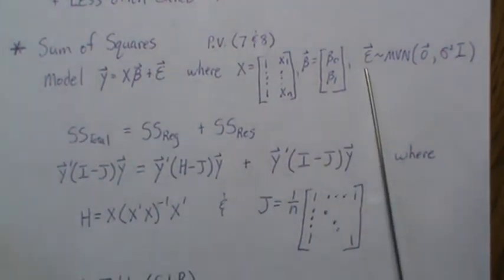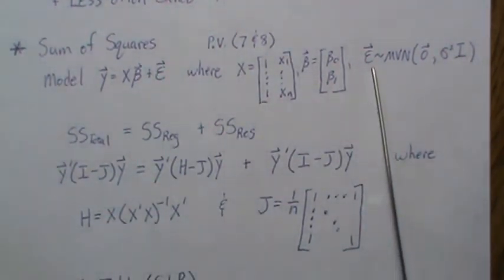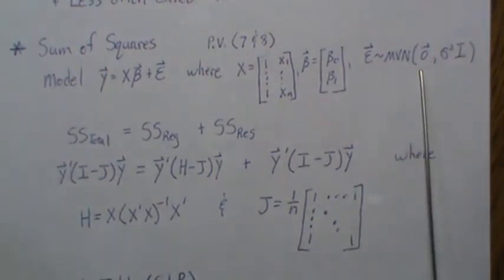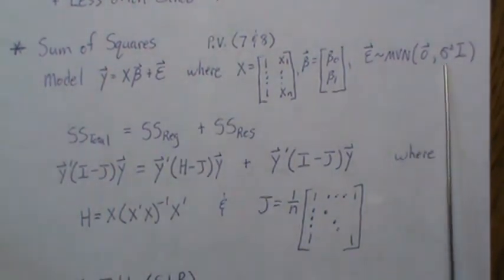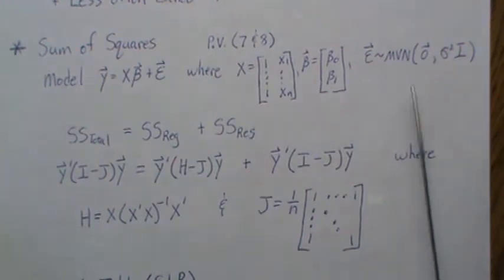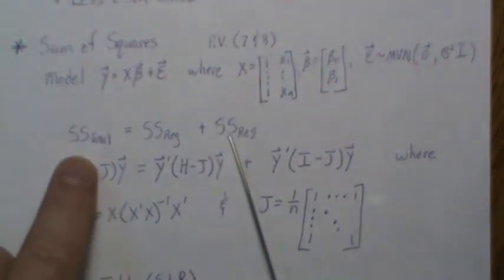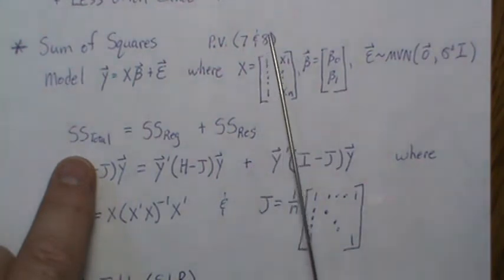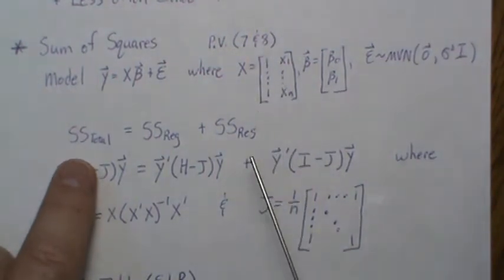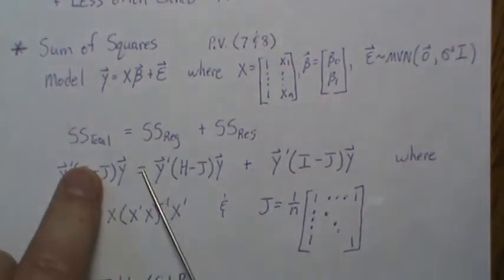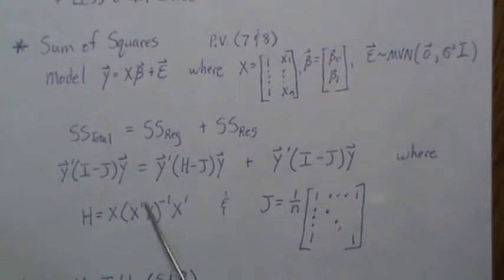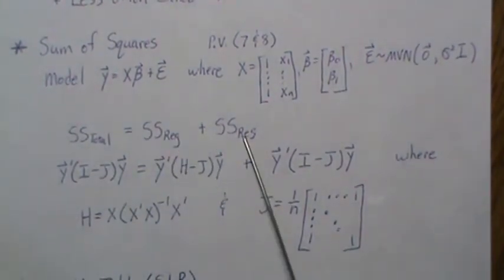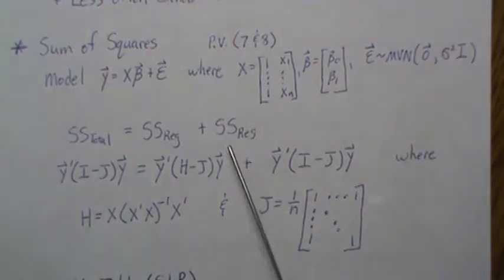We're going to assume that the error terms epsilon are a multivariate normal random variable with mean zero and variance-covariance matrix σ²I. The total sum of squares was partitioned into the regression sum of squares and the residual sum of squares.